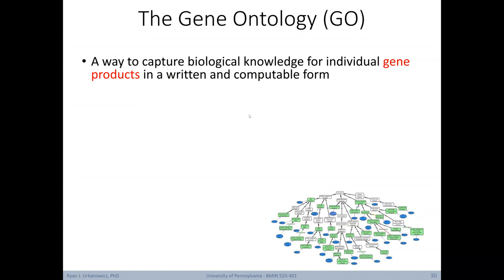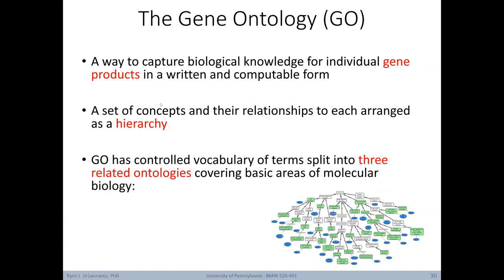Armed with a basic idea of how we can use ontologies in research, let's take a closer look at the Gene Ontology. GO provides a way to capture biological knowledge for individual gene products in a written and computable form. It includes a set of concepts and the relationships to each other arranged as a hierarchy. GO has a controlled vocabulary of terms split into three related ontologies covering basic areas of molecular biology, including molecular function, biological process, and cellular component.